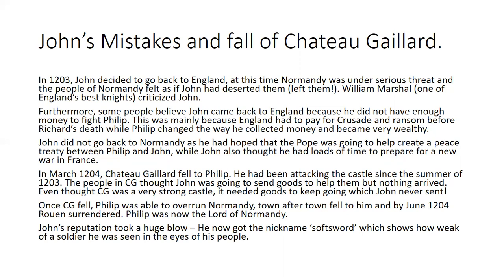In March 1204 the biggest event happened: Château Gaillard fell to Philip, who had been attacking it since the summer of 1203. The garrison expected John to send supplies but nothing arrived. Even though Château Gaillard was an incredibly powerful castle, it needed resupply to hold out, and John never provided it. Once it fell, Philip overran Normandy town by town, and by June 1204 - just three months after capturing Château Gaillard - Rouen, the capital of Normandy, surrendered. Philip had physical control of Normandy.